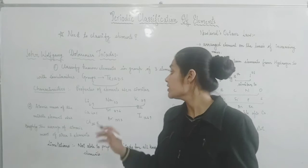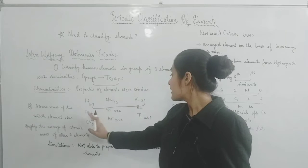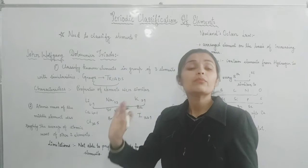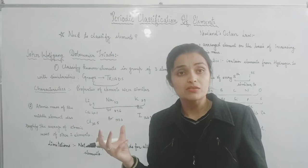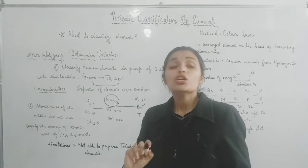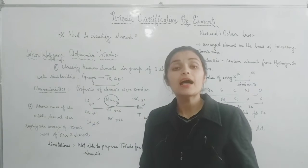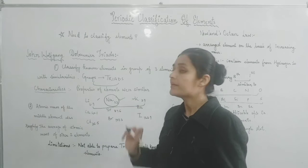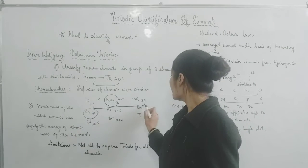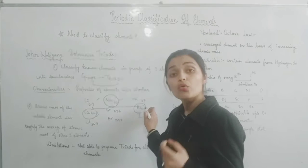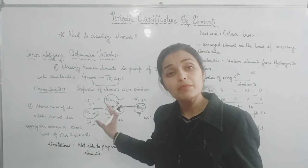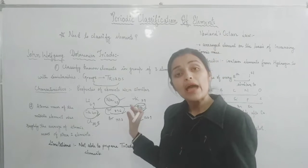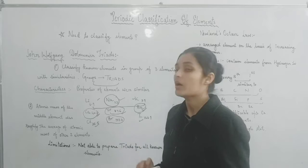Next, Dobereiner said that for three elements — lithium, sodium, potassium; calcium, strontium, barium; and chlorine, bromine, iodine — these form three triads. He stated that the atomic mass of the first and third elements in a triad, when averaged, gives the atomic mass of the middle element. For example, the average of calcium and barium gives strontium's atomic mass, and the average of chlorine and iodine gives bromine's atomic mass.